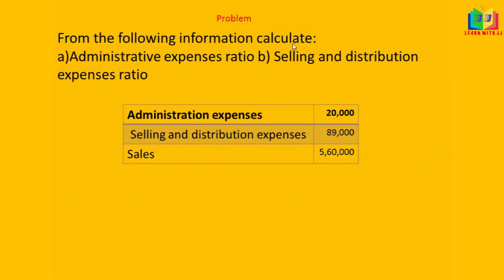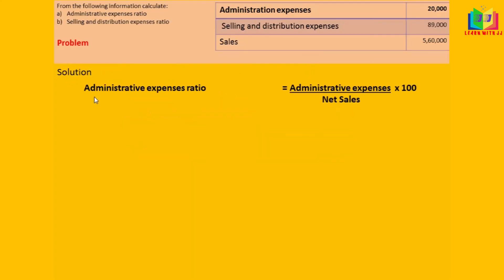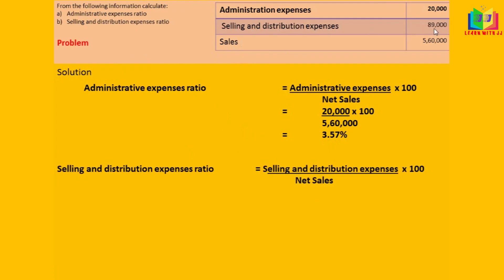Next problem: Calculate administrative expenses ratio and selling and distribution expenses ratio. Administrative expenses ratio = administrative expenses ÷ net sales × 100. Administrative expenses 20,000, sales 5,60,000: result is 3.57%. Selling and distribution expenses ratio = selling and distribution expenses ÷ sales. Selling and distribution expenses 89,000, sales 5,60,000: result is 15.89%.